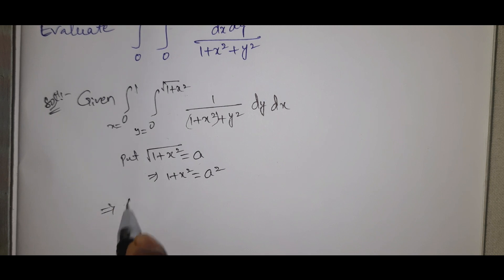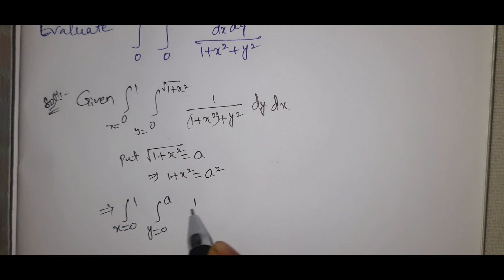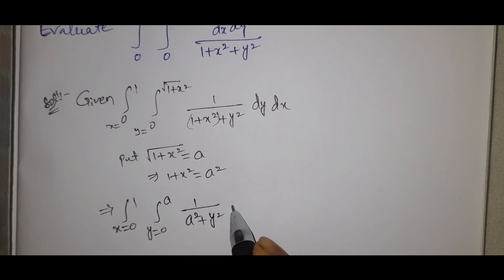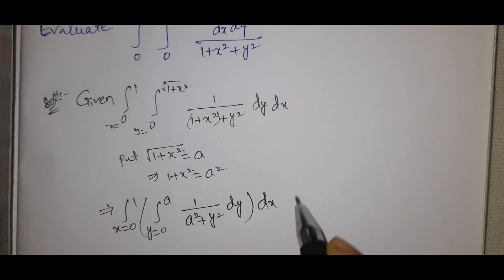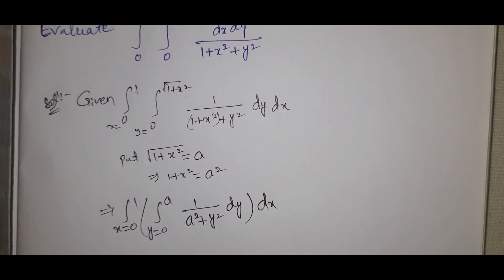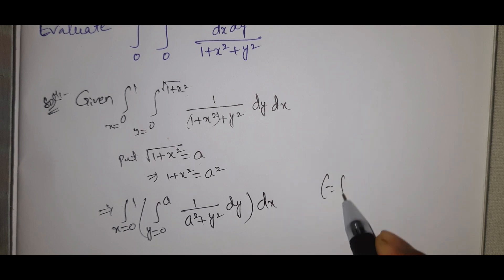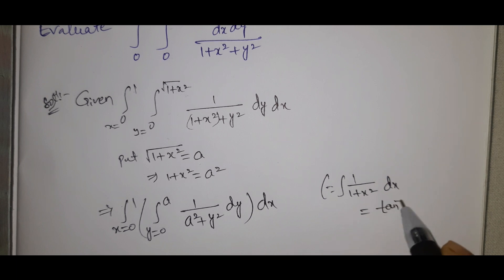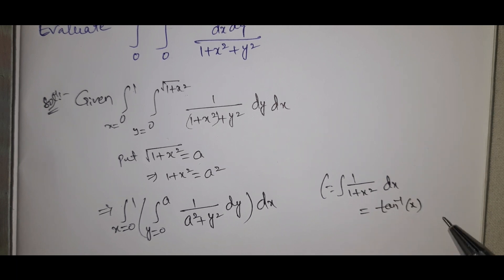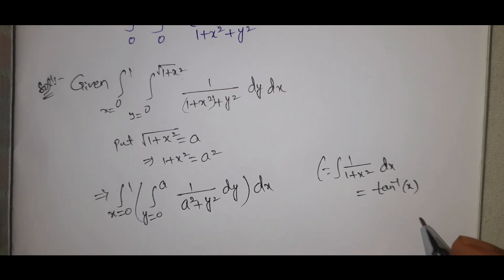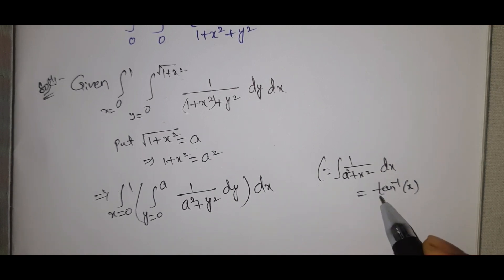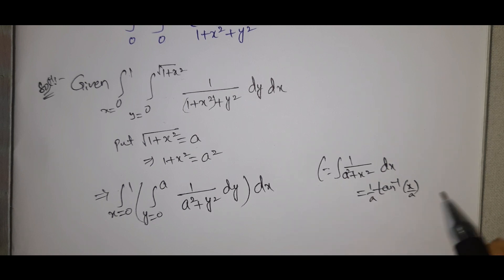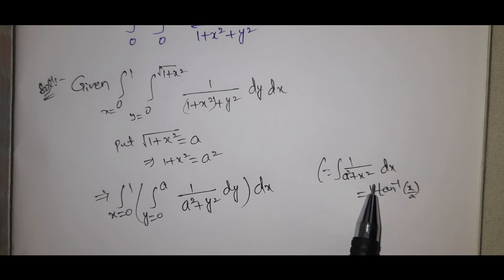Now the integral becomes: integral from x=0 to 1, integral from y=0 to a, of 1/(a²+y²) dy dx. Recall the formula: ∫1/(a²+y²) dy = (1/a) tan⁻¹(y/a).